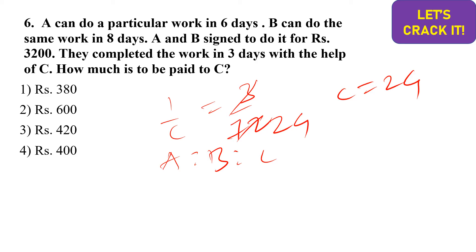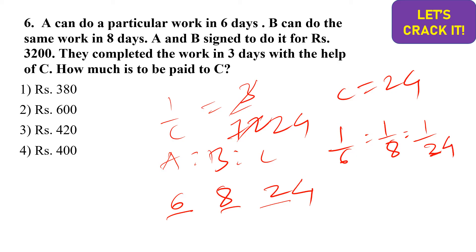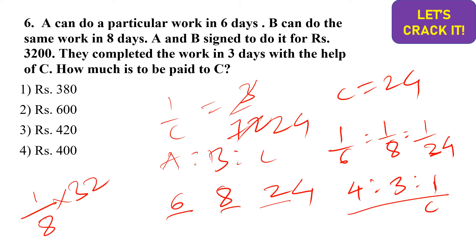C can complete the work in 24 days. The payment ratio is proportional to efficiency, i.e., inversely proportional to days taken: 1/6 : 1/8 : 1/24. Taking LCM of 24: this becomes 4 : 3 : 1. C's share is 1 part out of total 8 parts (4+3+1). So C's payment = (1/8) × 3200 = 400 rupees. Option D is the correct answer.